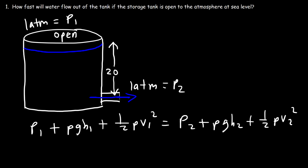The pressure 20 meters higher is going to be slightly less than the pressure at the bottom, but we assume it's almost the same, so we can neglect p1 and p2. We assume atmospheric pressure doesn't change much between those two points, so the gauge pressure is 0. Since the difference between p1 and p2 is 0, we don't have to worry about them.